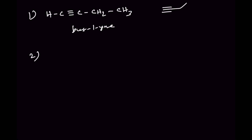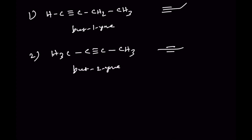Number two: we can write but-2-yne — CH3-C≡C-CH3 — we just shifted the triple bond position. The same bond line notation is shown. This is but-2-yne.